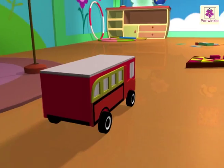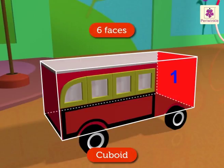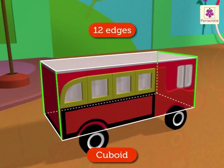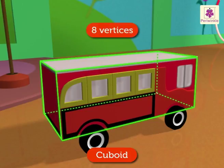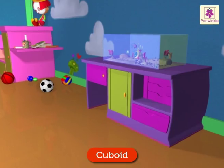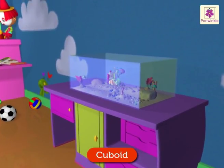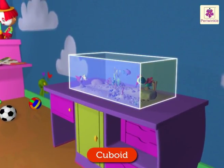The red toy bus is cuboid in shape. A cuboid has six faces, twelve edges and eight vertices. There are so many fish in the fish tank — the fish tank is also cuboid-shaped.